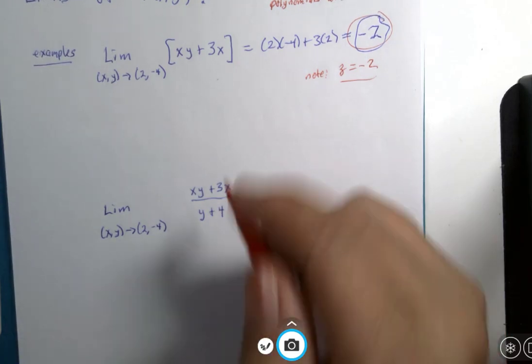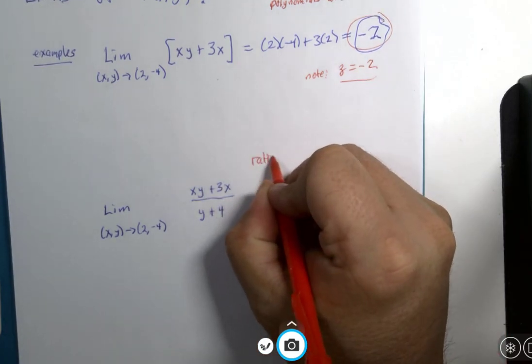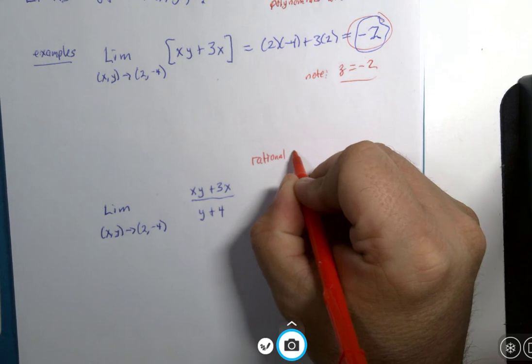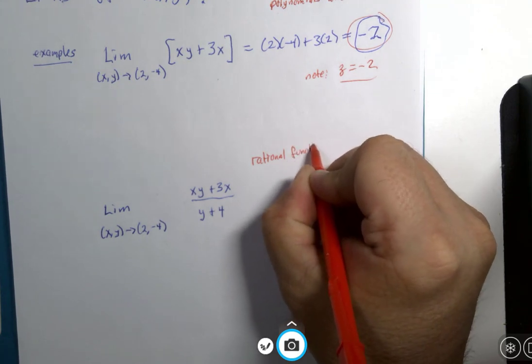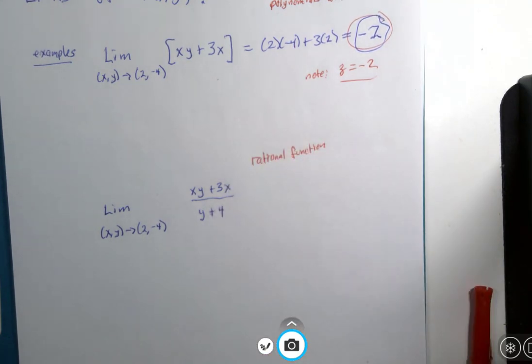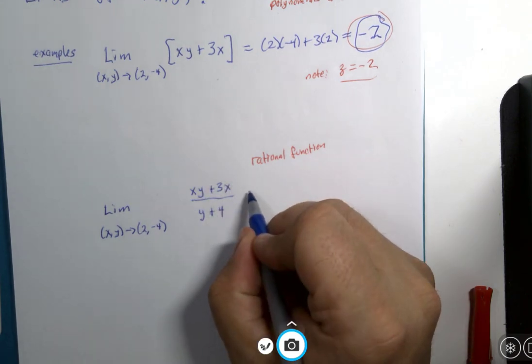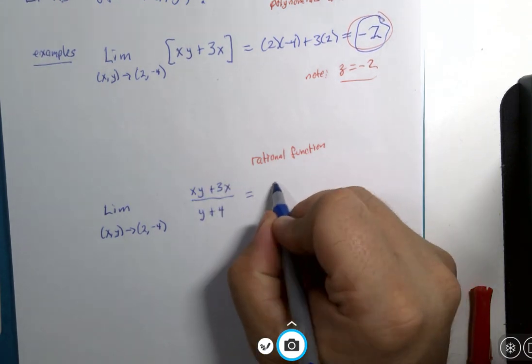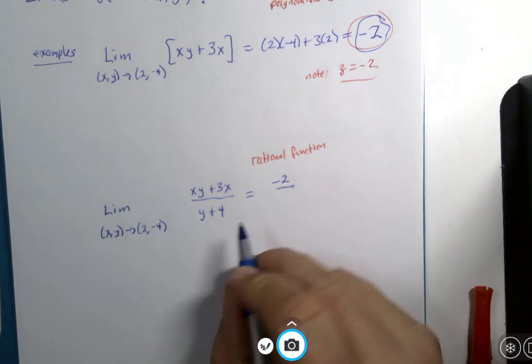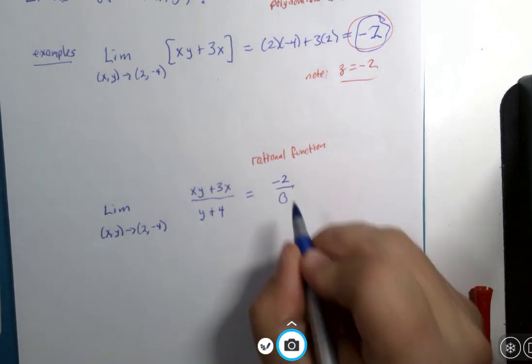And so a rational function is sometimes defined as a polynomial divided by a polynomial. But regardless, if you do the substitution, you're going to get negative 2 in the numerator, and you will get 0 in the denominator.